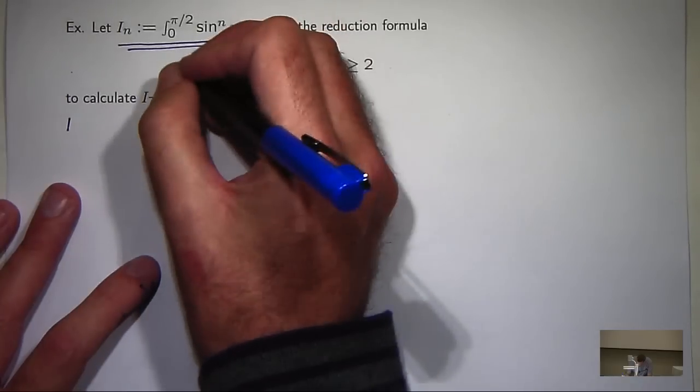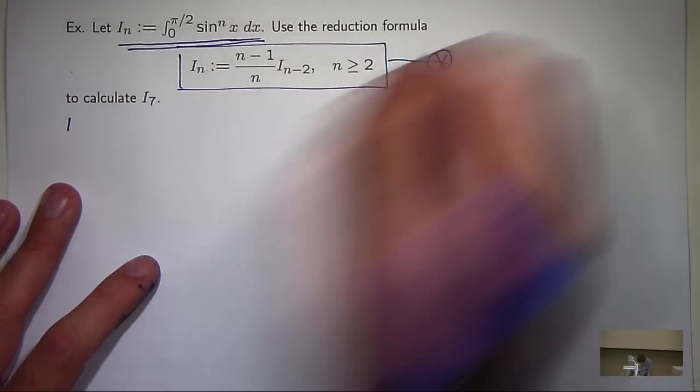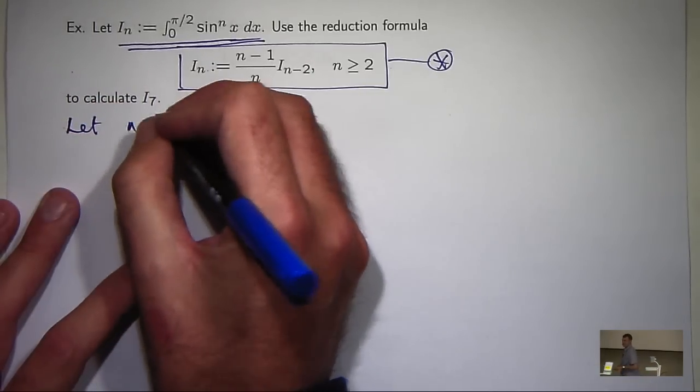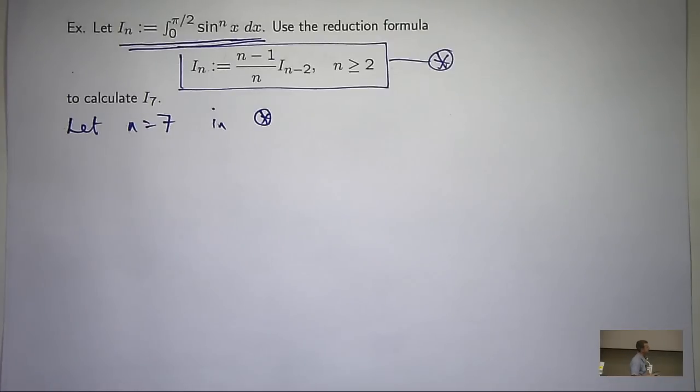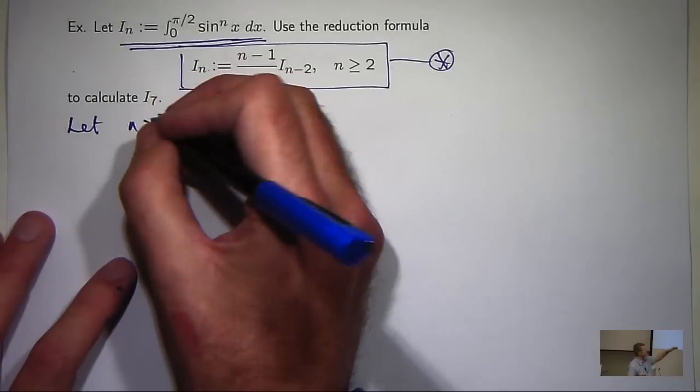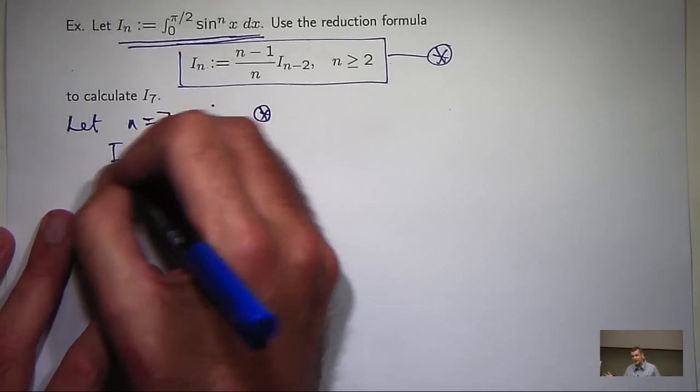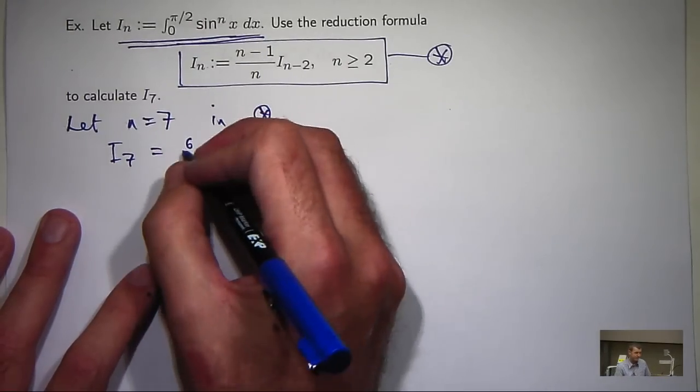So as a first iteration, we're going to let n equal 7 and then keep on going. So I sub 7 is going to be 6 on 7 times I sub 5. So we've broken I sub 7, the integral I sub 7, down to 6 on 7 times I sub 5.